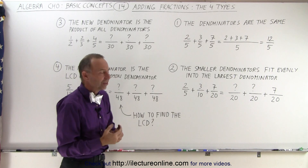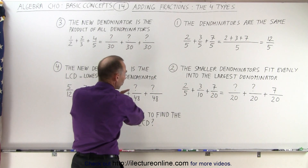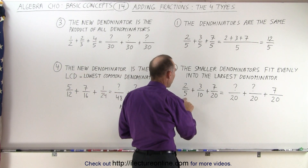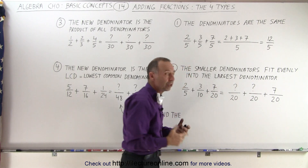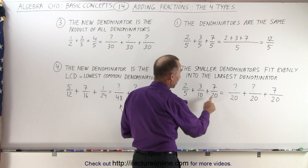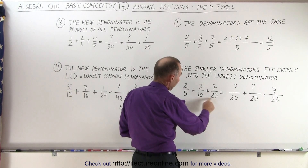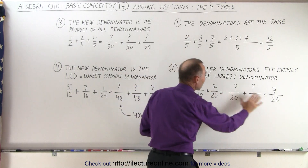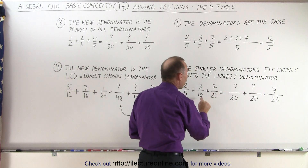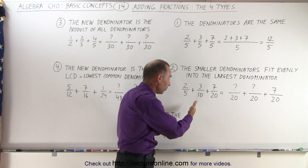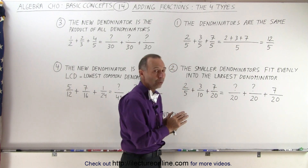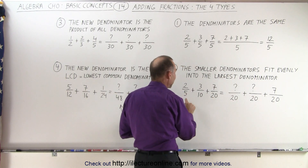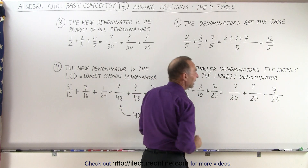But if the denominators are not the same — which is the case for the next three types — you take a look at the denominators and see if the smaller denominators fit evenly into the largest one. In this case, the largest one is 20. Notice that 10 fits into 20 evenly twice, and 5 fits into 20 evenly four times, which means the new denominator for all three fractions will be equal to the largest of the denominators. That rule applies whether there are two, three, or four fractions — the largest denominator becomes the new common denominator if the others fit evenly into it.